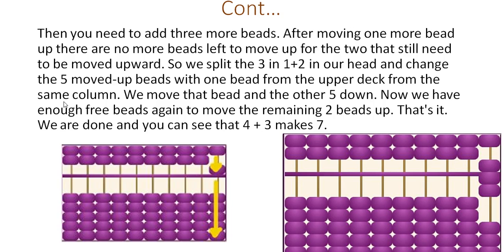Then you need to add the 3 more beads. After moving one more bead up, there are no more beads left to move up for the 2 that still need to move upward. So we split the 3 into 1 plus 2 in our head. Let's exchange the 5 lower beads with 1 bead from the upper deck of the same column. We move that bead and the other 5 down.